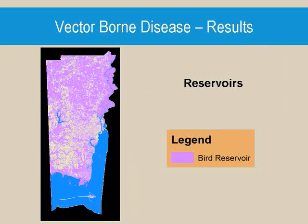A single land classification map was created for Mobile County. The land classification map was performed to identify reservoir habitats, which include vegetation for the birds of prey, and urban areas for the jays, finches, and crows. These types of birds have been proven to have a higher capability of carrying West Nile virus or Triple E.